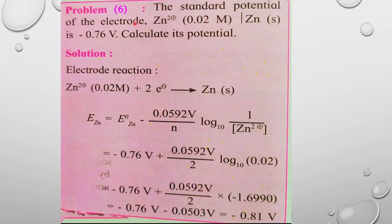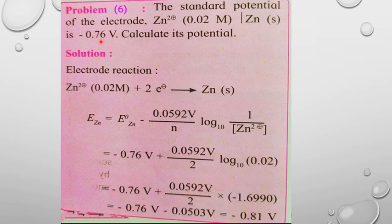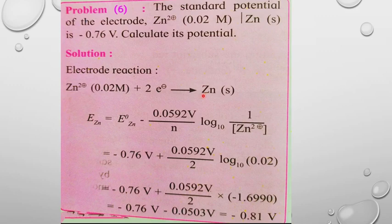Problem 6: The standard electrode potential of zinc is −0.76 V. Zinc electrode is dipped in a Zn²⁺ solution of concentration 0.02 molar. Calculate the electrode potential. The reaction given is the reduction reaction: Zn²⁺ (0.02 M) + 2e⁻ → Zn.